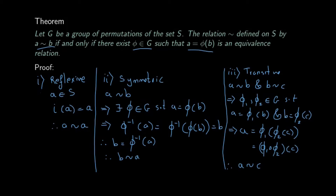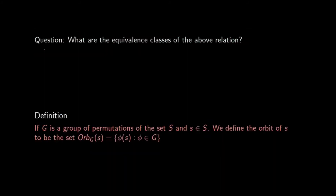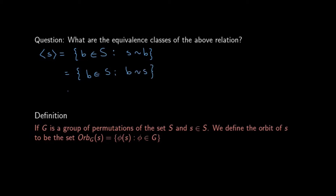An obvious question to ask is: what are the equivalence classes of this relation? Let us look at the equivalence class of the element s — that is, the set of all points b in S such that s is related to b, or by symmetry, b is related to s. B is related to s if b = φ(s) for some φ in G. We call this set the orbit of s.